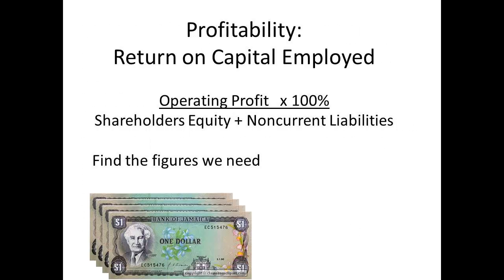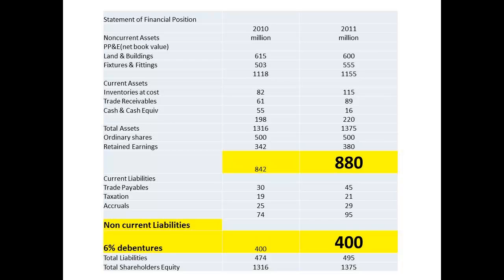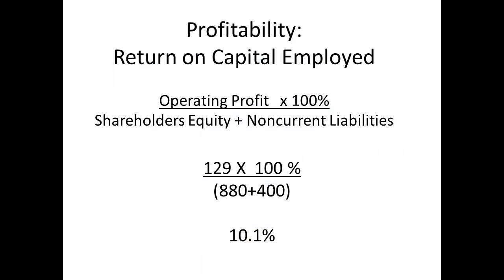The next ratio we consider is the return on capital employed. This is given by dividing the operating profit by the sum of the shareholders' equity and non-current liabilities. The operating profit, taken from the income statement, is £129 million for the period in question. Retained earnings are £880 million and the non-current liabilities are £400 million, both from the balance sheet. We substitute these into our equation: £129 million divided by the sum of £880 million and £400 million, then multiply by 100 to give a percentage. We have 10.1%.